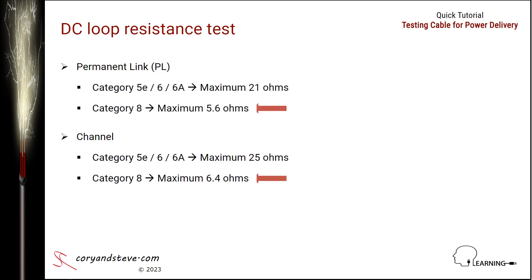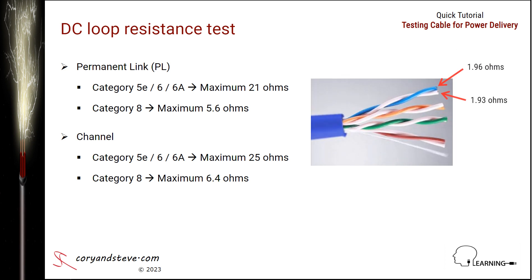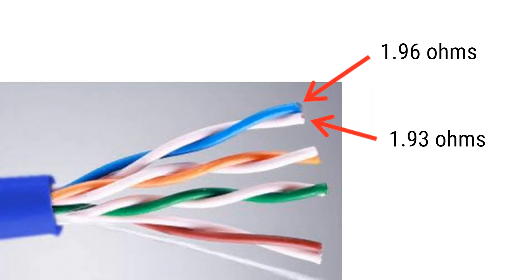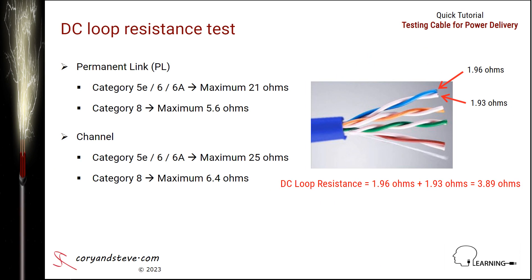The maximum allowable DC loop resistance values for permanent links and channels are listed here. Note that the category 8 limits are lower than the limits for categories 5E, 6, and 6A because of the shorter permanent link and channel length limits for category 8. In the example shown, the DC loop resistance for pair 1, the blue pair, is measured to be 3.89 ohms, well below the 21 ohm limit for a permanent link and 25 ohm limit for a channel, so this pair passes the test.